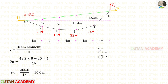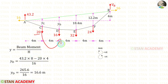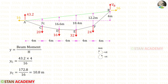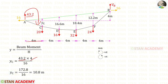Now let us find the dip YD. The vertical reaction is acting clockwise with distance 8, positive. The load is acting anti-clockwise with distance 4, negative. For YD we will get 16.6 meter. Now let us find YC. The reaction is acting clockwise with distance 4, positive. For YC we will get 10.8 meter.